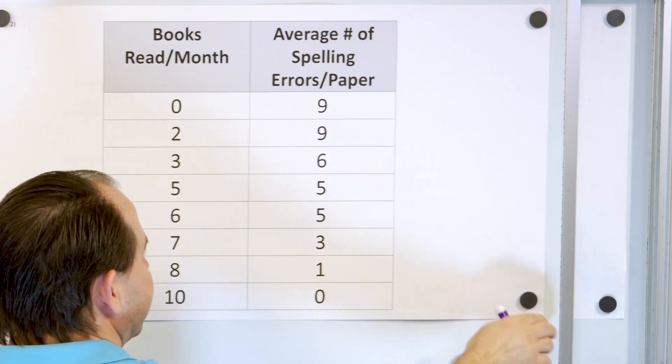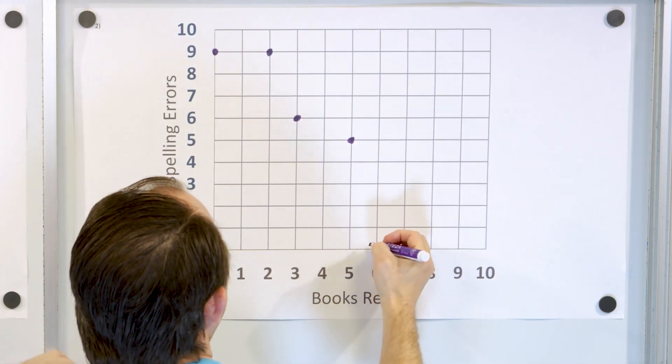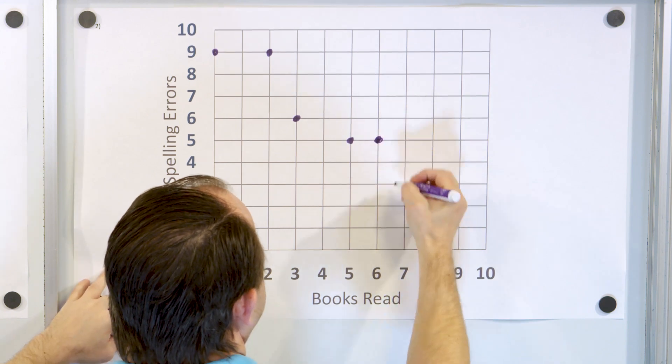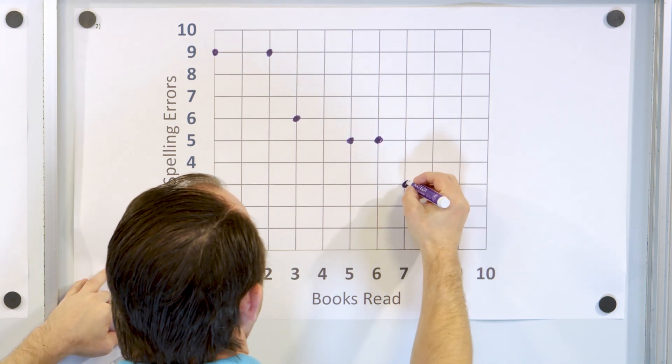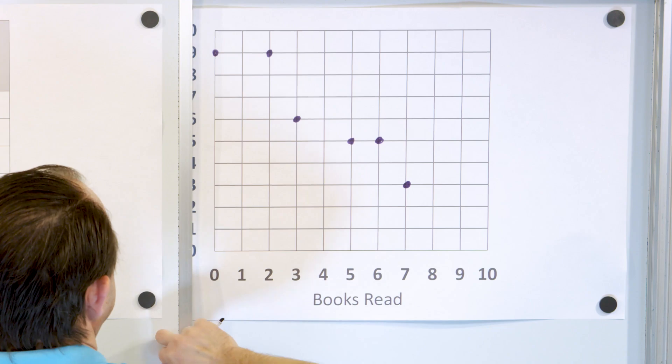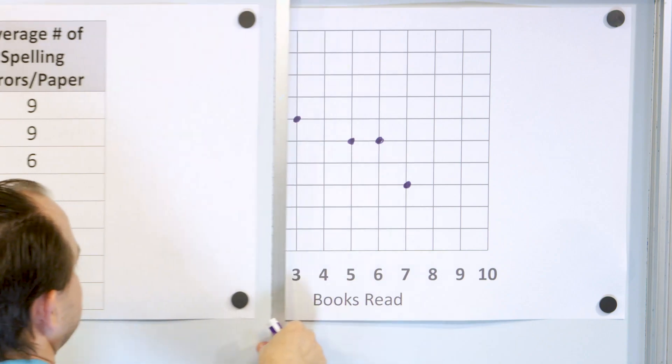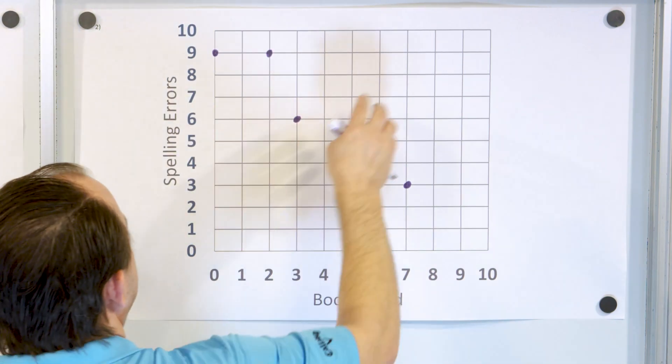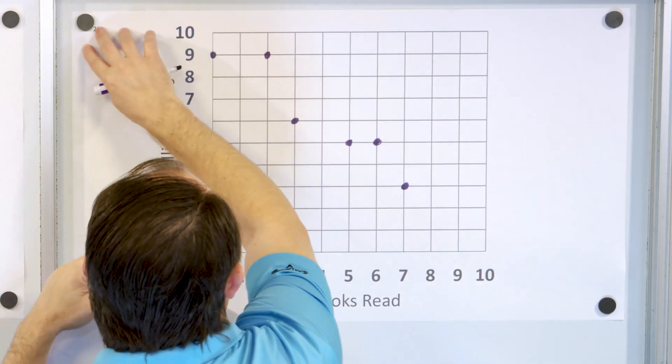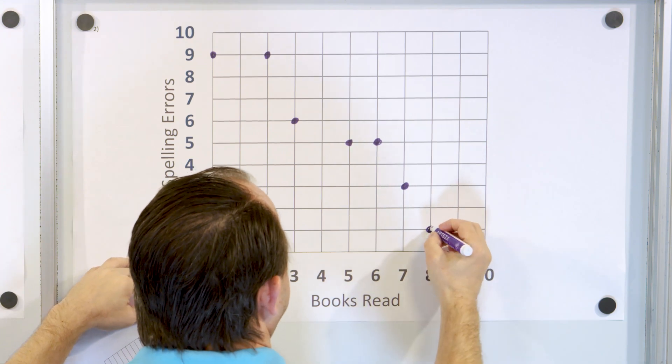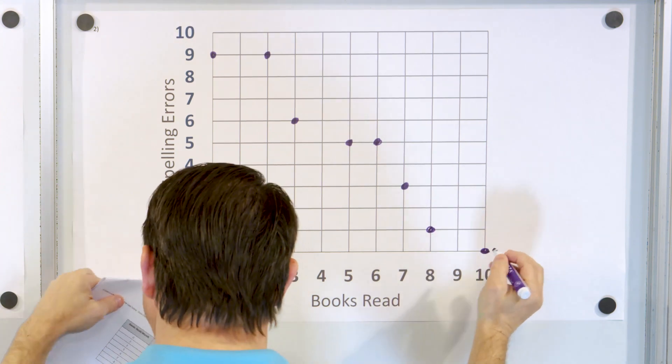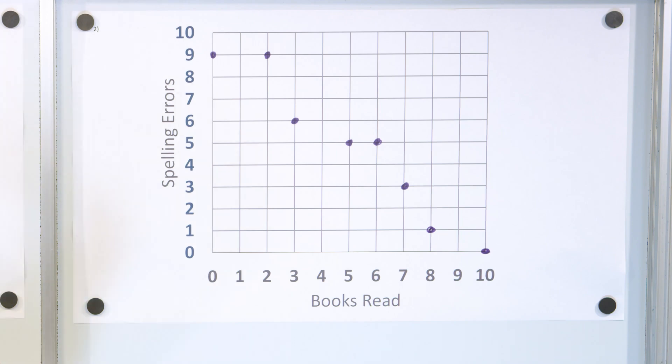Then we have six comma five, seven comma three, and then we have eight comma one, ten comma zero. So we have eight comma one and ten comma zero. So this is the scatter plot we've drawn.